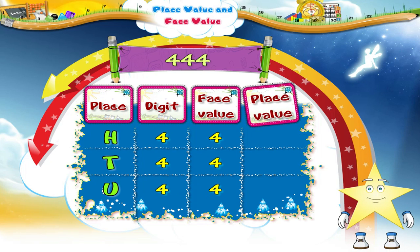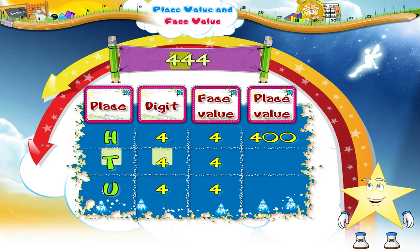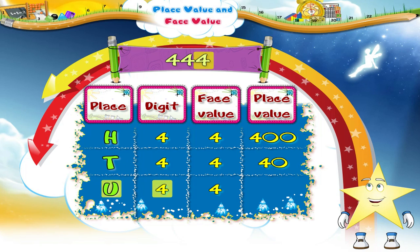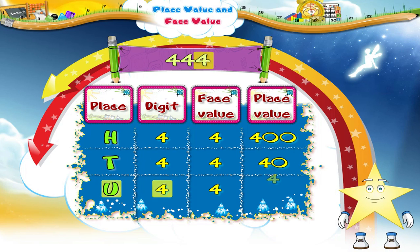Now for the place values. The place value of four in the hundreds place is four hundred. For the four in the tens place, the place value is forty. And for the four in the units place, the place value is four.